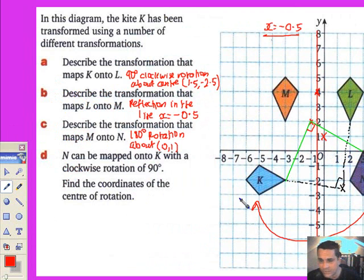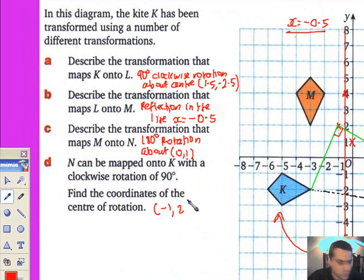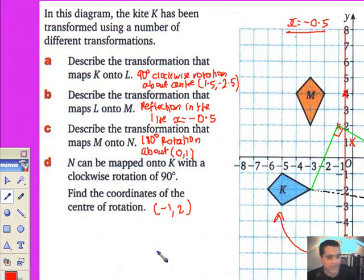One more time: N can be mapped onto K with a clockwise rotation. The coordinates, in other words the center of rotation, is going to be (-1,2). Let's quote that: (-1,2), and that's in agreement with the answer book. I think I'll stop there and then look at the last couple of questions before we get into the assessment.